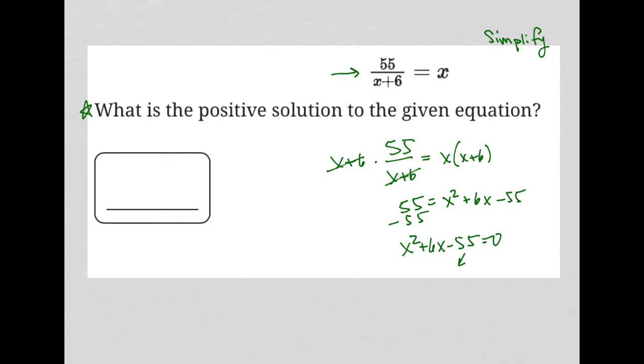So hopefully there are two numbers or two factors of negative 55 that also add up to positive 6. And indeed there are because 11 times negative 5 is negative 55 and 11 plus negative 5 is positive 6.